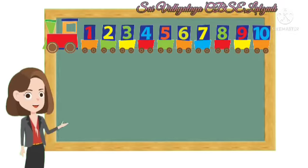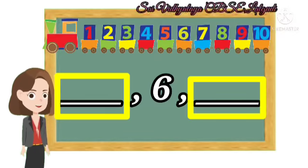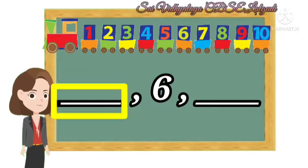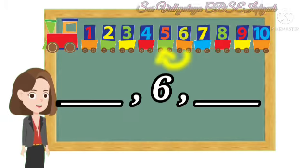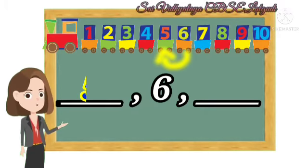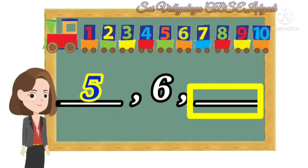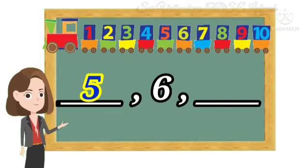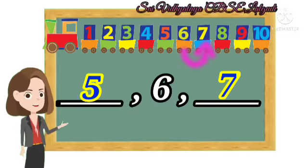Let's see last example. Here we should find the numbers before and after 6. Do you know what comes before 6? 6 before 5. Yes, so write 5. Now tell me what comes after 6? 6 after 7. Yes, so write 7.